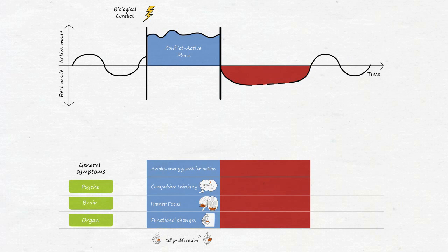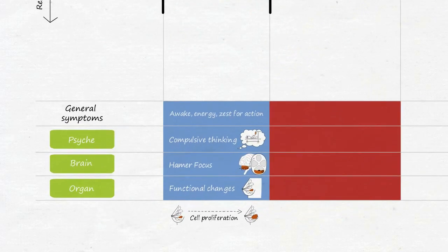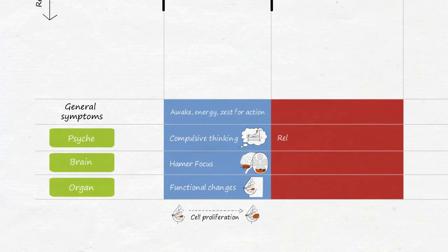The conflict-active phase ends with conflict resolution, when the causal threat is gone and the SBS loses its reason for being. Now starts the second phase, the so-called conflict-resolved phase. On a psychological level, we are relaxed, happy, or even euphoric, as the stressful situation is now a thing of the past.